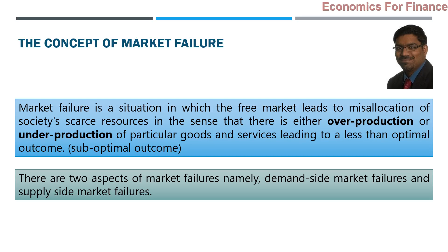Market failure is a situation in which the free market leads to misallocation of society's scarce resources. We must always keep in mind that the basic economic problem is the same: resources are scarce, requirements are many. The economic system is supposed to allocate resources properly so that scarce resources are used efficiently and effectively. But if the free market economy fails to allocate scarce resources in a proper manner, we call that a misallocation, which manifests as either overproduction or underproduction of particular goods and services.